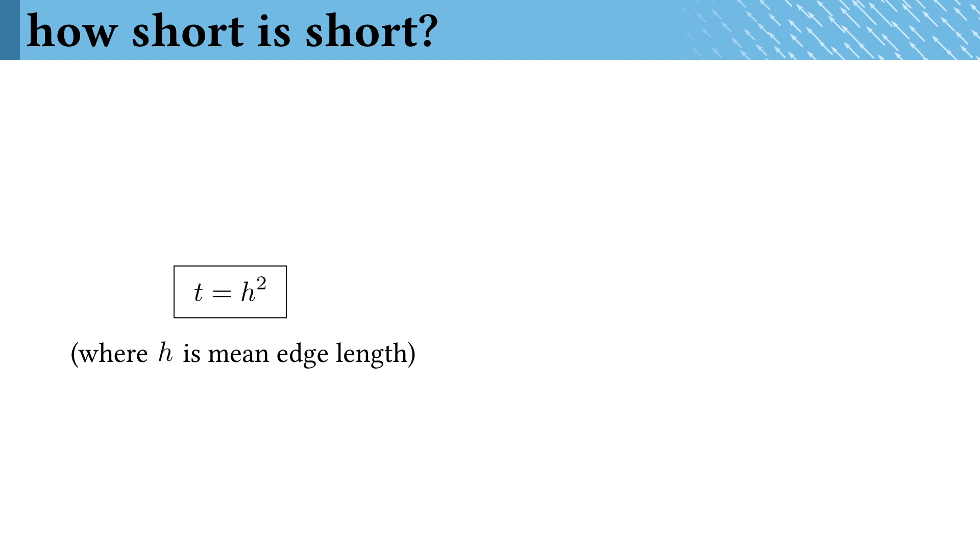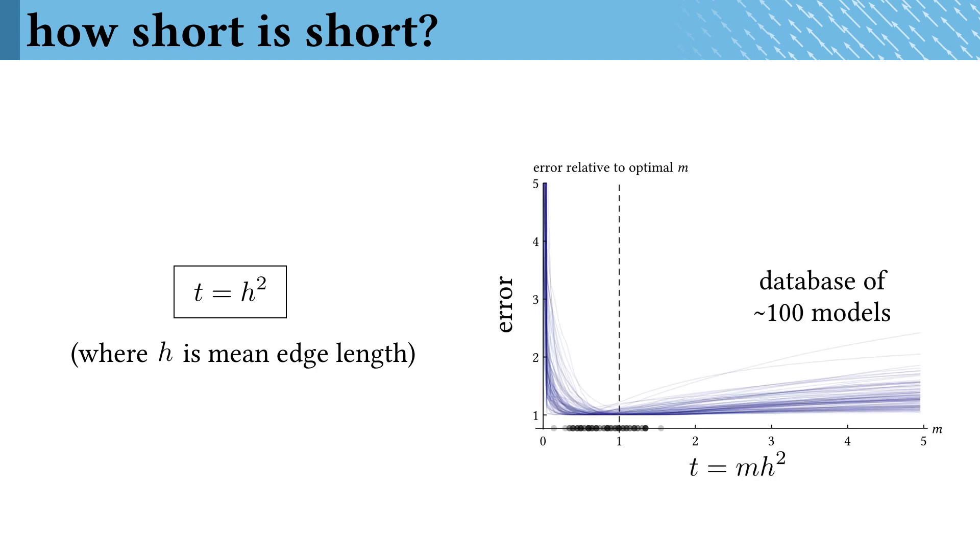We performed some additional experiments on a database of models and confirmed that this is really consistently a good choice in practice. Here, each line represents a model, and we swept through different choices of the short-time t. We see that t = h² is consistently near the optimal choice and is never a bad choice for any of the models.